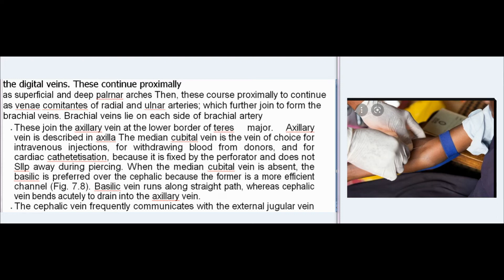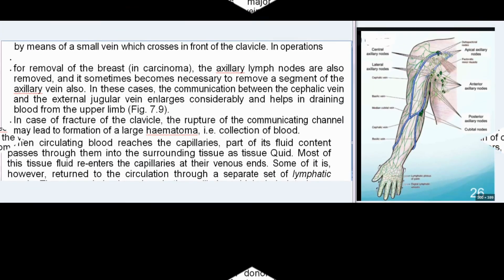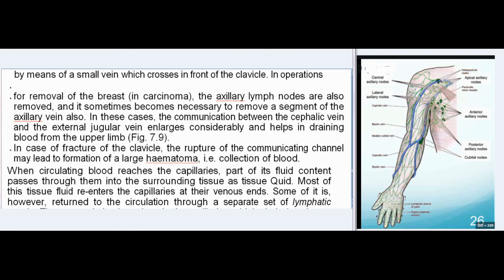The median cubital vein is the vein of choice for intravenous injections, withdrawing blood from donors, and cardiac catheterization, because it is fixed by the perforator and does not slip away during piercing. When the median cubital vein is absent, the basilic is preferred over the cephalic, as the basilic runs a straighter path whereas the cephalic bends acutely to drain into the axillary vein. The cephalic vein frequently communicates with the external jugular vein by a small vein crossing in front of the clavicle; in operations for breast carcinoma, this communication enlarges considerably and helps drain blood from the upper limb.